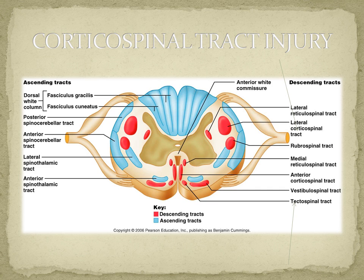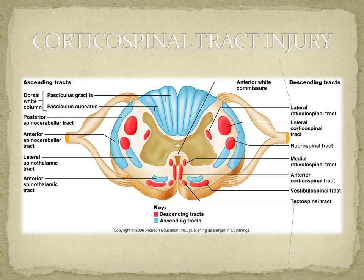By way of review, I have a slide showing a cross section of the spinal cord high up into the cervical spine to refresh your memory on the ascending and descending tracts. We're going to focus on the anterior and lateral corticospinal tracts, because those are the tracts specifically mentioned in the AMA guides. The anterior and lateral corticospinal tracts comprise what is known as the pyramidal tracts. There are other descending motor tracts that also contribute to motor function and coordination that are considered extrapyramidal.